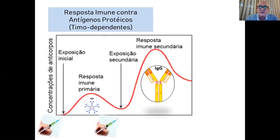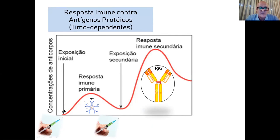Voltando às vacinas normais, essencialmente feitas de antígenos proteicos: os antígenos proteicos dependem do linfócito T para que o B faça a resposta secundária. Na primeira exposição, a resposta primária é sempre baseada em IgM. Depois de algum tempo, se fizermos uma nova exposição, essa resposta tende a ser mais rápida e mais elevada, mudando o tipo de anticorpo.